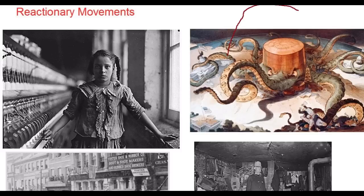Here we have the Standard Oil Company depicted as an octopus grabbing up innocent Americans in its tentacles. Reformers were also reacting against control of politics by the wealthy — John D. Rockefeller, who owned Standard Oil, was seen as a corrupter who had politicians under his great influence.